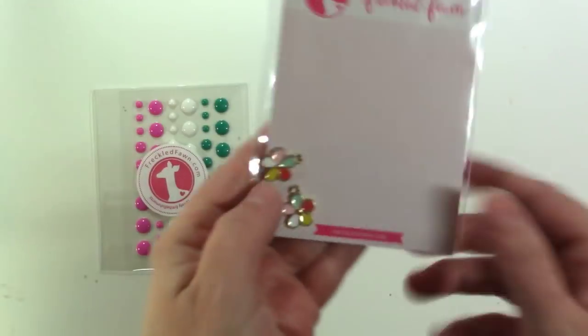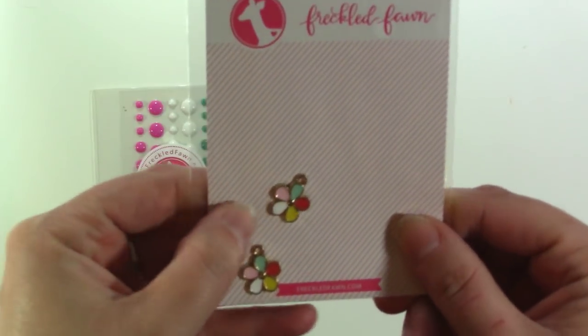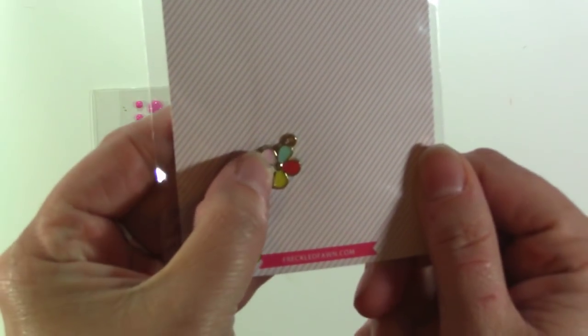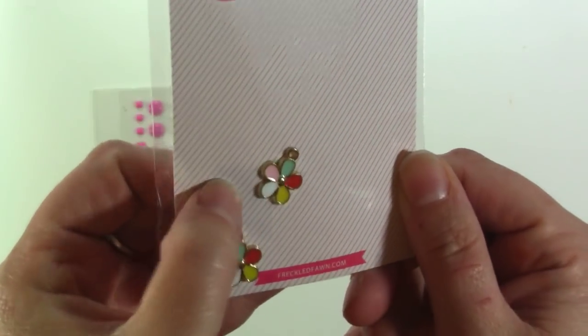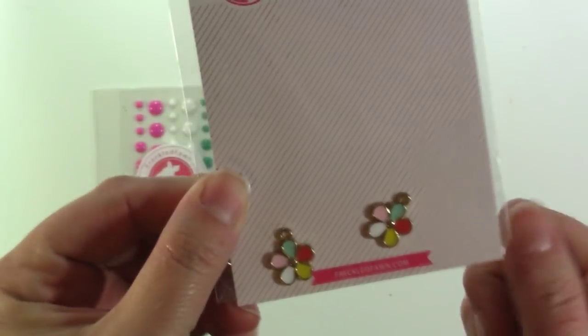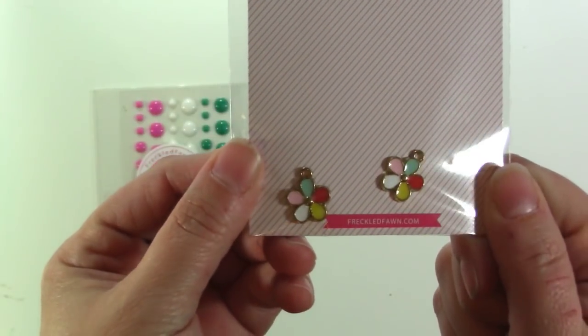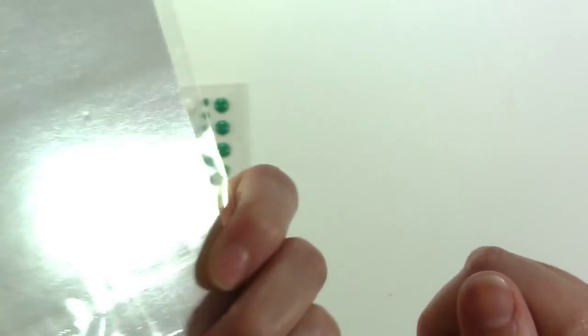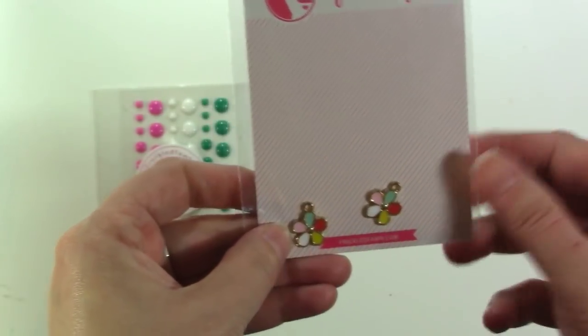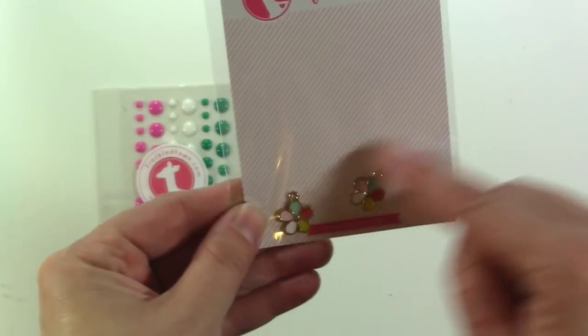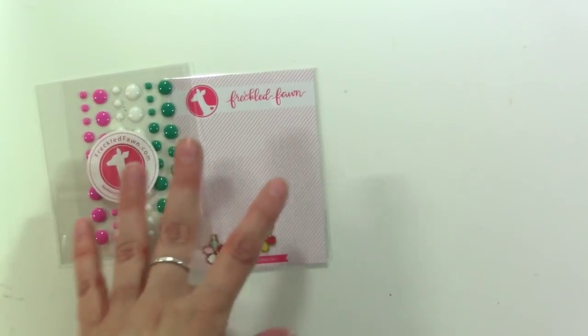We have got two little charms and these are like enamel on a gold finish. These would make cute earrings and in fact I might make earrings for my daughter with these because I think they're adorable. But they'd be cute to hang from somewhere too. If you do planners that would be fun to hang from your planner. So we've got that.